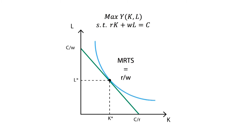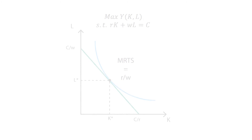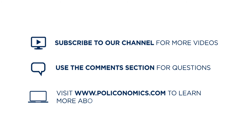This optimization problem must be seen as one of two sides of a coin, called production duality. Indeed, a similar but opposite analysis can be done by solving the dual problem: the cost minimization problem.